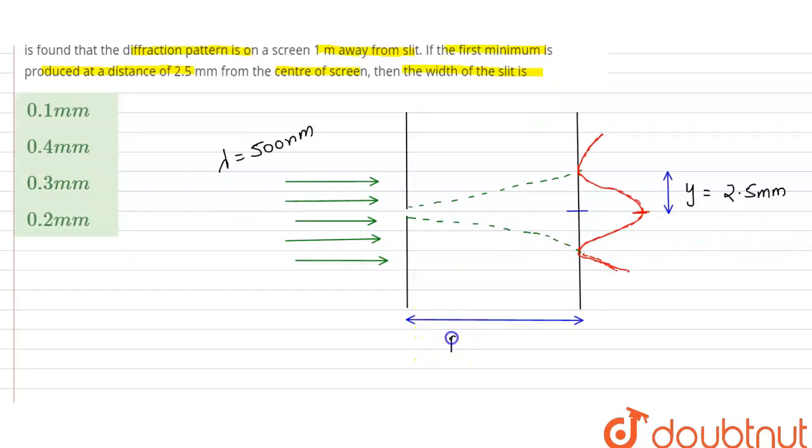The value of D, the distance between slit and screen, is given to us as 1 meter. In this question, we have to find the value of small d, the width of the slit.